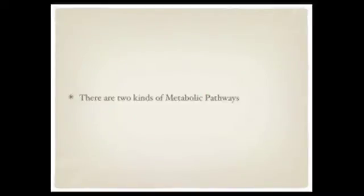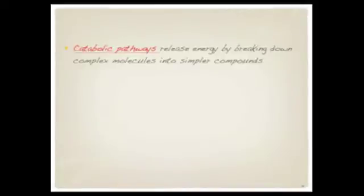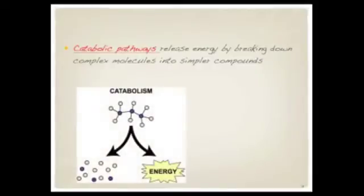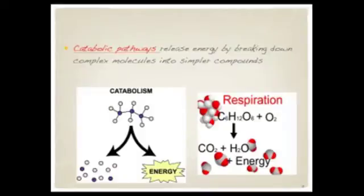There are two kinds of metabolic pathways. First, we have what are called catabolic pathways, which release energy by breaking down complex molecules into simpler molecules. A real-life example of this is cellular respiration. We eat things like sugars and breathe in oxygen — those are the reactants. And with the help of enzymes, we break down that sugar and make products, including carbon dioxide, water, and we release energy.